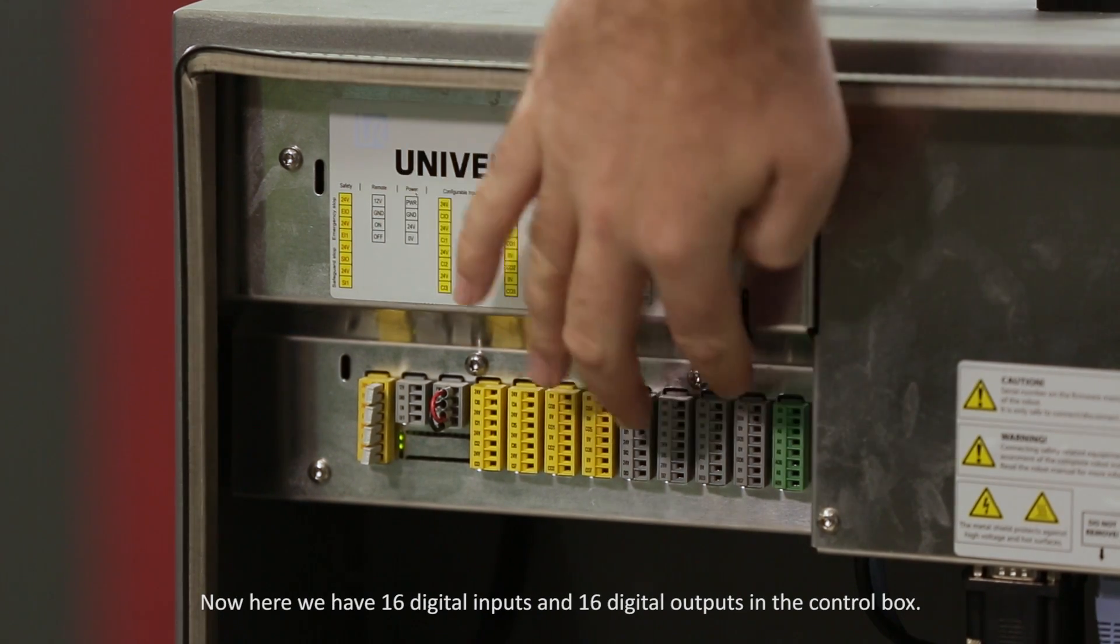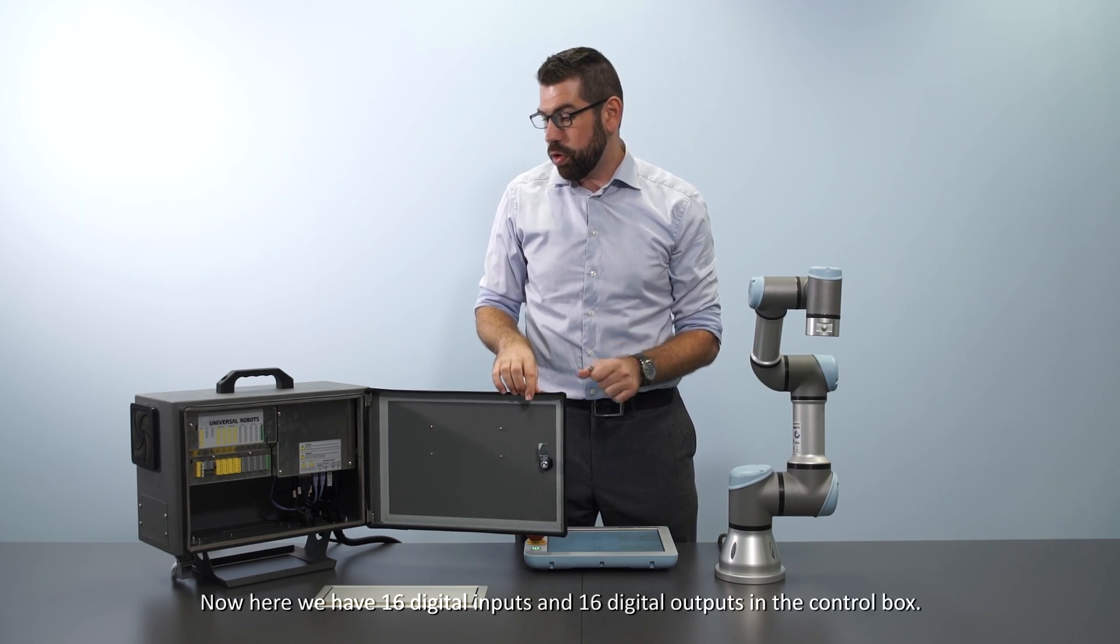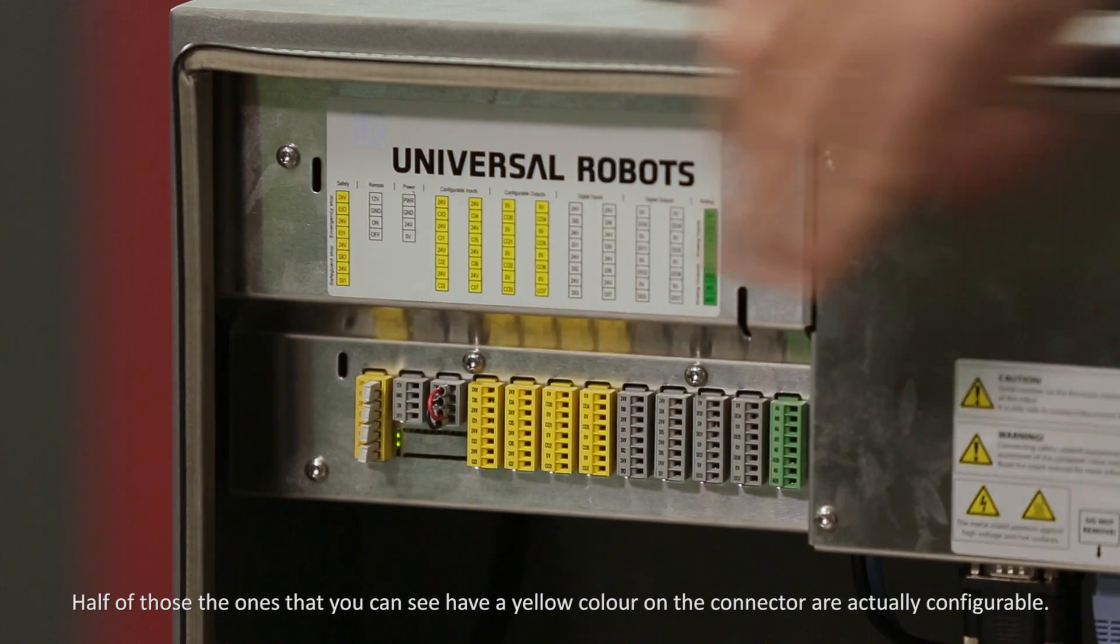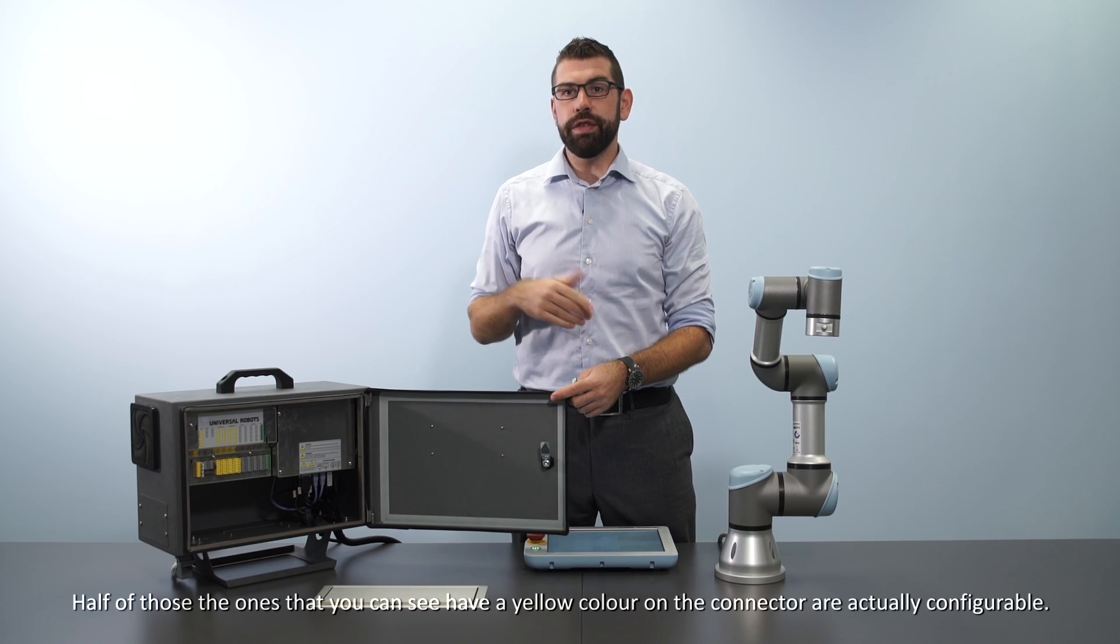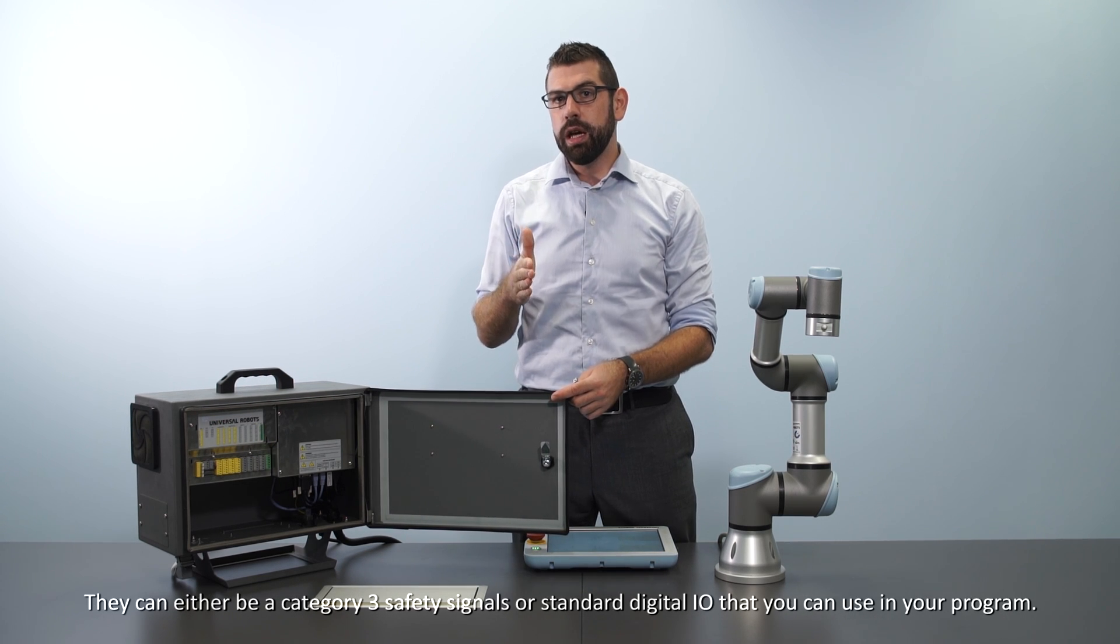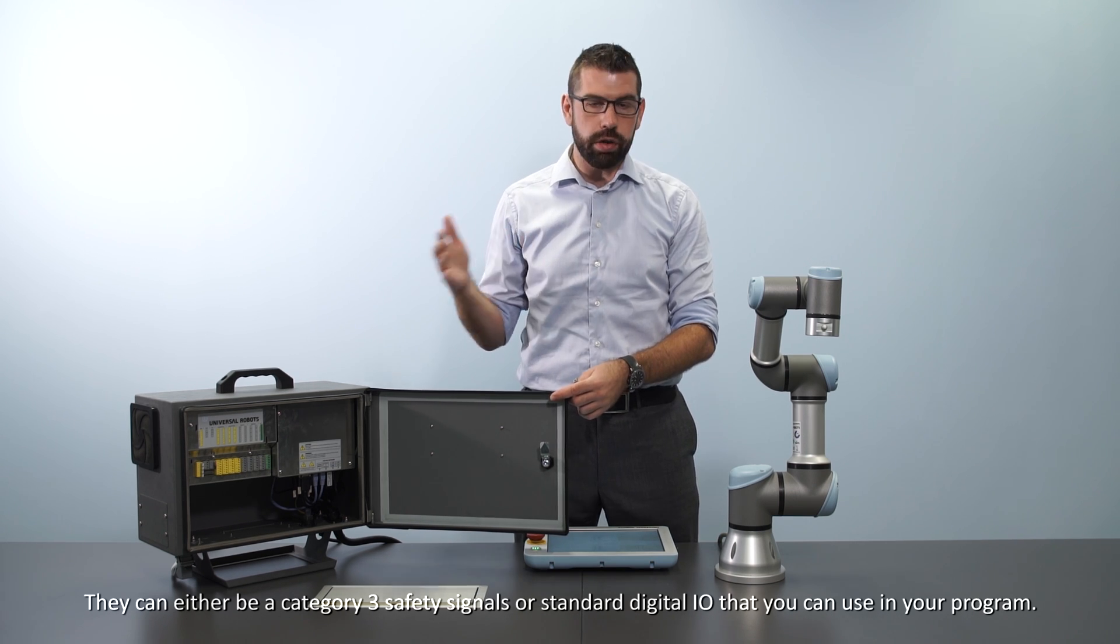Here we have 16 digital inputs and 16 digital outputs in the control box. Half of those, the ones that you can see have a yellow color on the connector, are actually configurable. They can either be category 3 safety signals or standard digital I.O. that you can use in your program.